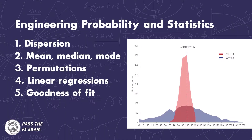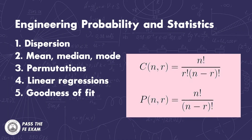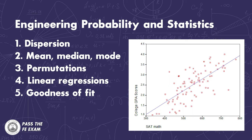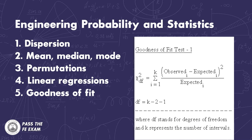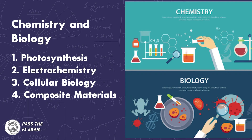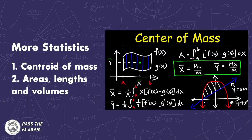Number five, engineering probability and statistics, covering dispersion, mean, median, and mode values, permutations and combinations, linear regression, and goodness of fit — just to name a few. Number six, the chemistry and biology section, which covers items such as photosynthesis, electrochemistry, cellular biology, and composite materials. Number seven, statics — the handbook covers a wide variety of facts on statics such as centroids of masses, areas, lengths, and volumes.